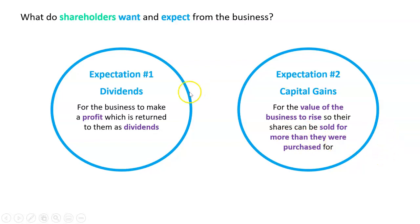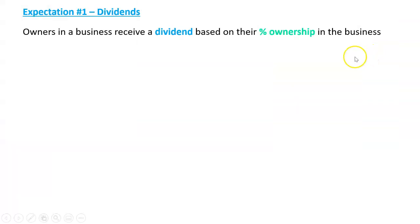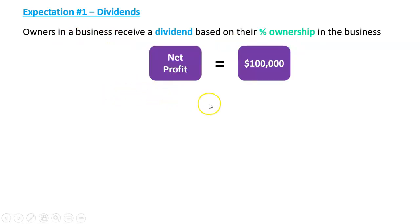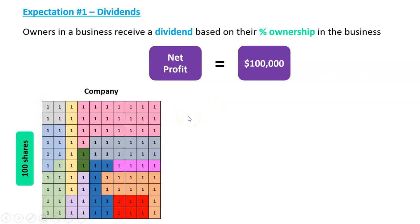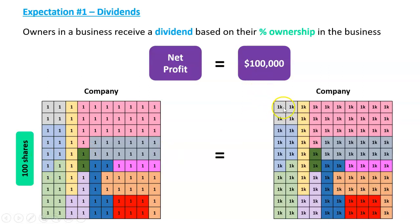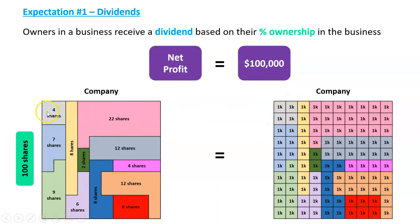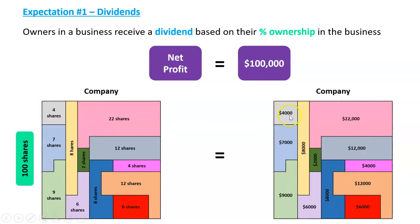So to summarize, those are the two things that shareholders want. Let's look at dividends more closely. Owners receive a dividend based on their percentage ownership. Say the net profit of the business is $100,000 and the company has 100 shares, each owned by different people — one person owns four, another seven, another two, and so on. Each share block is entitled to $1,000 of profit. So the person with four shares gets $4,000, the person with eight shares gets $8,000, the person with twelve shares gets $12,000, and so on. That's how dividends work.